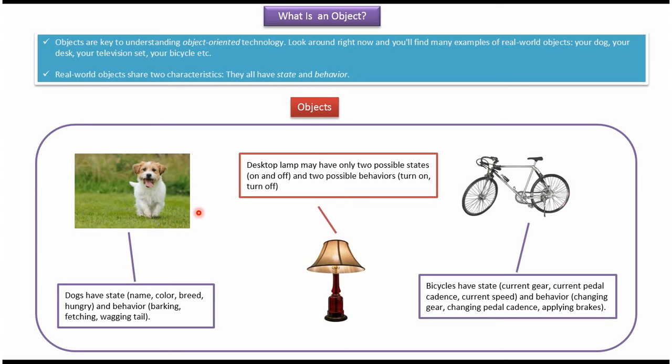Here you can see examples of real world objects: dog, lamp, and bicycle. Dogs have states like name, color, breed, and hungry, and behaviors like barking, fetching, and wagging tail.